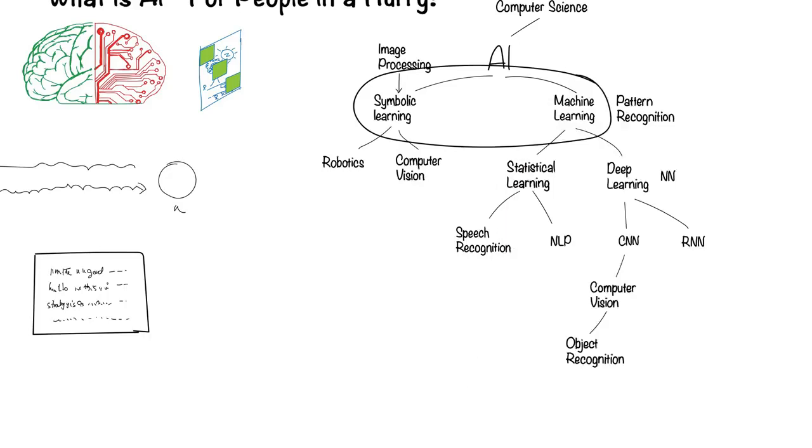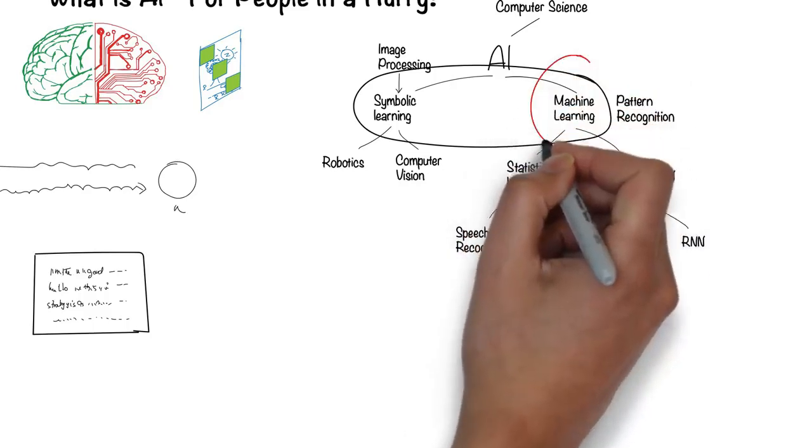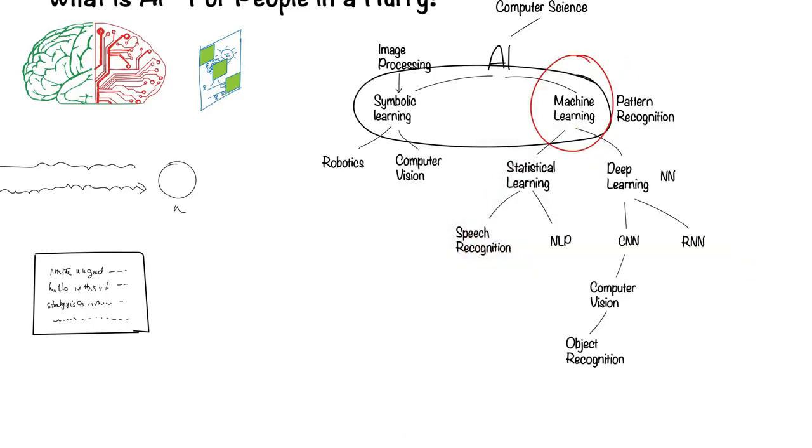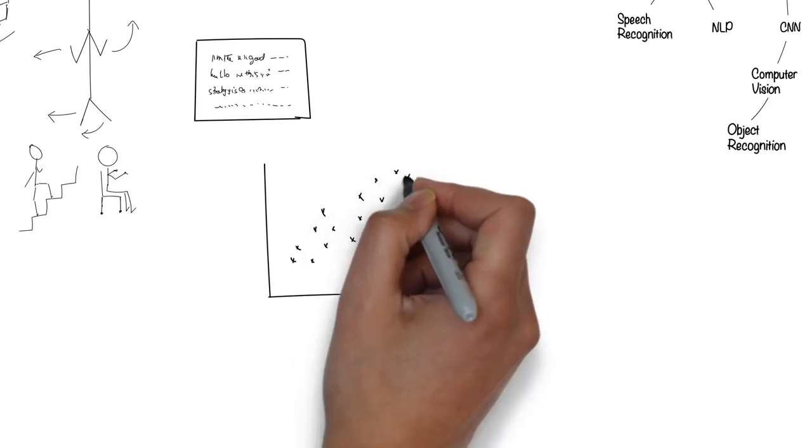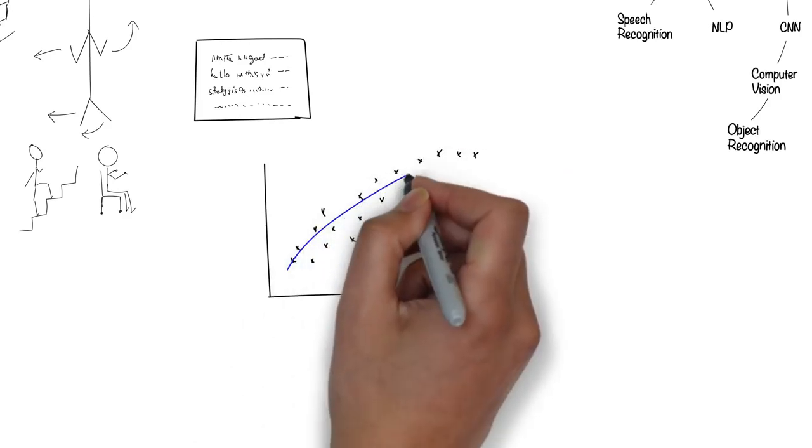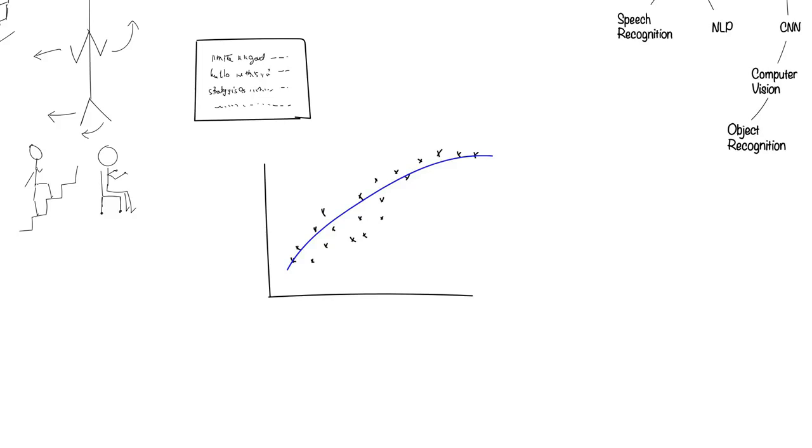One is symbolic-based, and another is data-based. For the data-based side, called machine learning, we need to feed the machine lots of data before it can learn. For example, if you had lots of data for sales versus advertising spend, you can plot that data to see some kind of a pattern. If the machine can learn this pattern, then it can make predictions based on what it has learned.